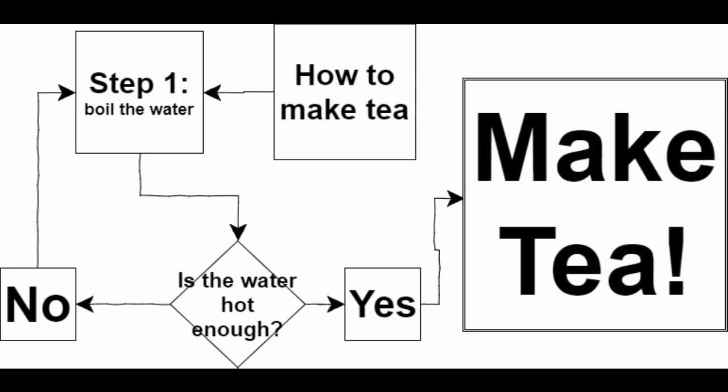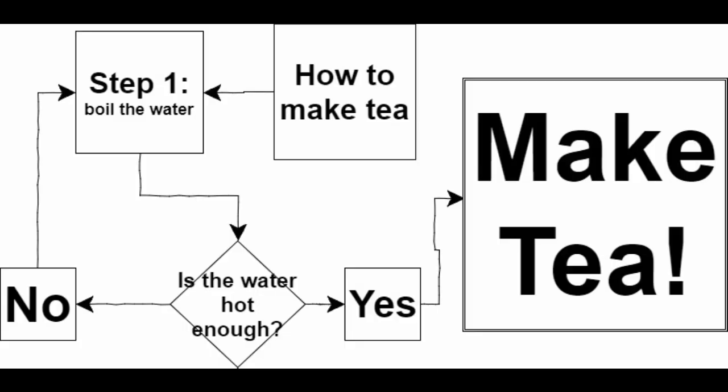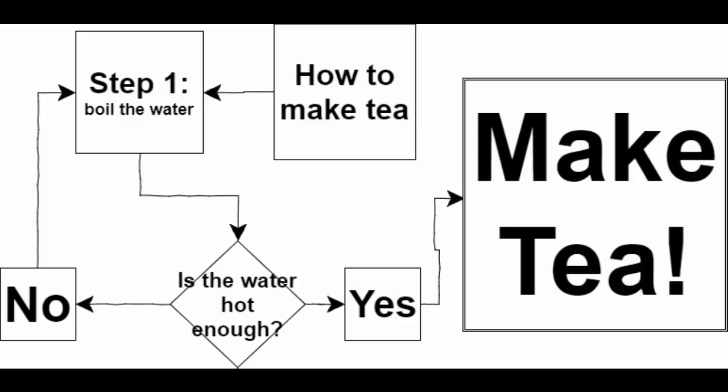Now in this flowchart there are several steps to making our tea. The first step is we need to boil the water. Now after we're boiling our water, we have a decision to make — a yes or no decision. Is the water hot enough? If the answer is no, we go back to boiling the water. Maybe after a minute: is the water hot enough? No. After two minutes? No. And so on and so forth.